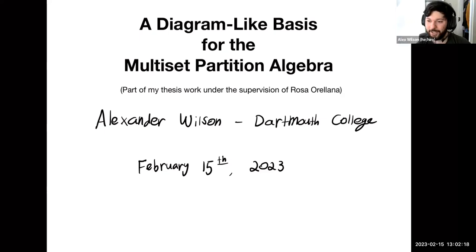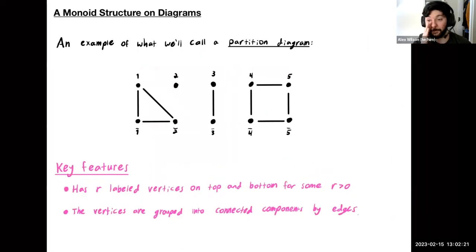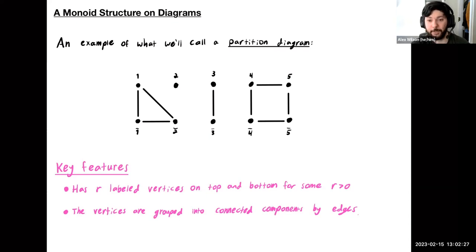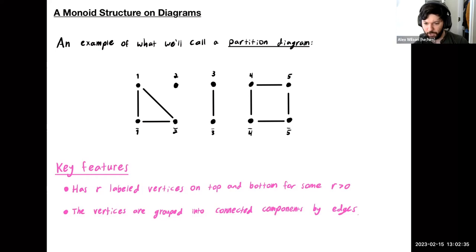Thank you so much. I'm going to start with a picture, because I am going to be subjecting you to some algebra later, but I thought we'd have a bit of a gentle start. This is an example of what we're going to call a partition diagram. The important features to notice are that it has R-labeled vertices on the top and the bottom for some positive R, and the vertices are grouped together into connected components by edges.